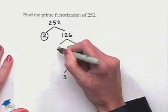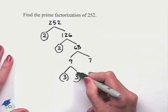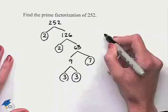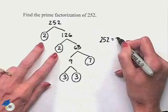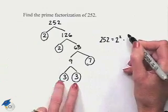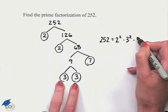So we take the end of our tree, the little branches, and we come up with 252 equals 2 squared times 3 squared times 7.